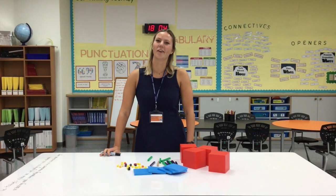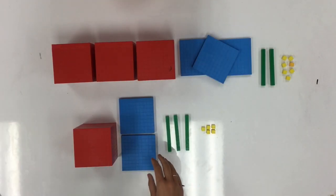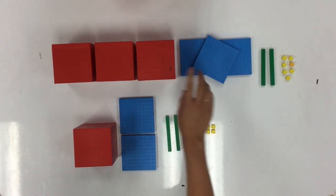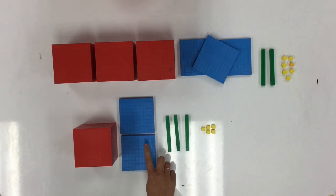Hi guys, in today's video we're going to talk about ordering and comparing numbers in a concrete way. We've just made two numbers, 3,327 and 1,235.